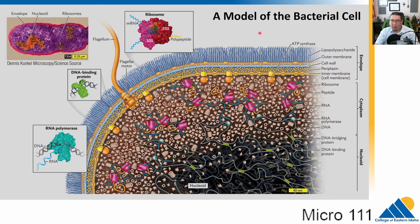Looking at a cartoon diagram and an electron micrograph of a bacterial cell to orient ourselves: we have the envelope — that's all the stuff on the outside, the outer layers, the cell wall, the cell membrane. Inside of that is the cytoplasm. Here's a flagella. There are lots of different molecules involved, so there's a lot of stuff going on in here.